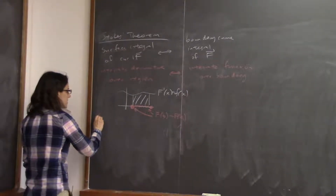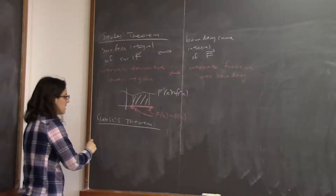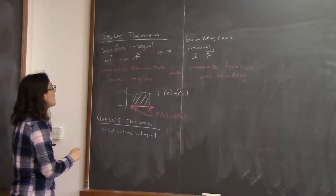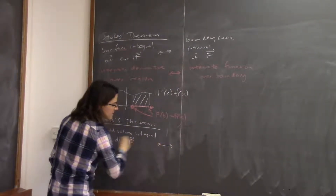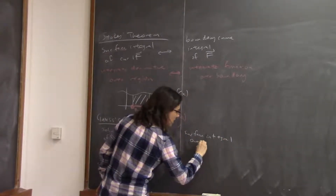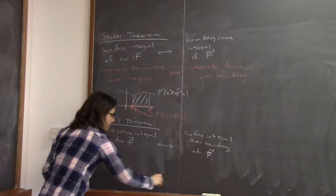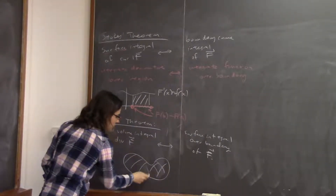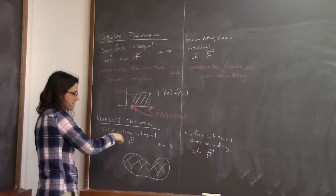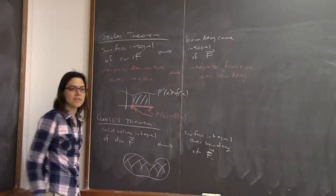Today we'll start talking about Gauss's theorem. Gauss's theorem says that the solid volume integral — the three-dimensional integral of the divergence of F — is the same as, with the correct sign, the surface integral over the boundary of F itself. So if you want to integrate over the whole solid of divergence of F, it's the same as integrating F itself just over the surface, as long as you have the correct orientation.